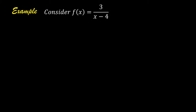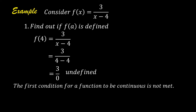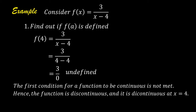Example: consider f(x) = 3 over (x minus 4). First step, find out if f(a) is defined. f(4) = 3 over (4 minus 4) = 3 over 0, which is undefined. The first condition for a function to be continuous is not met. Hence, the function is discontinuous at x = 4.